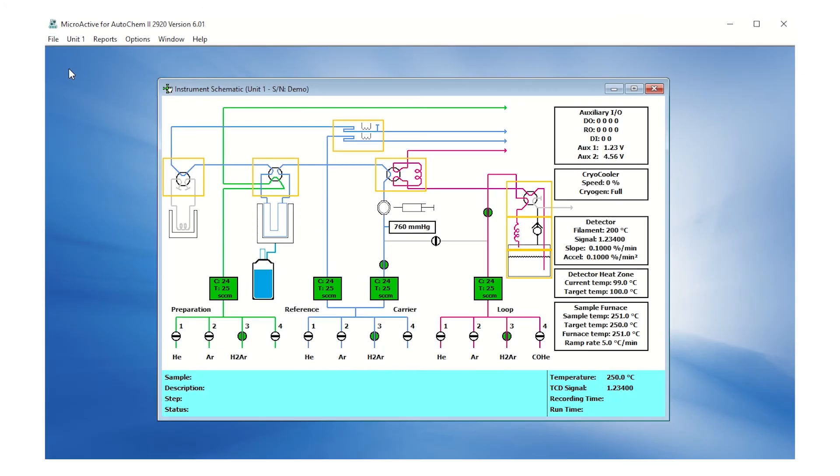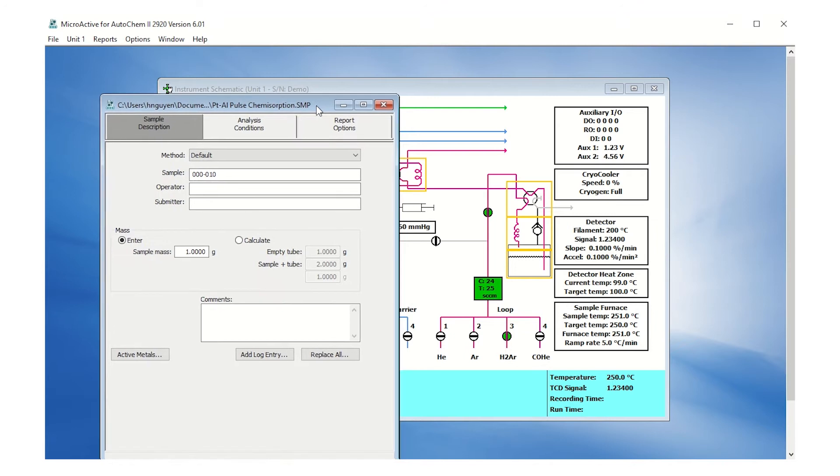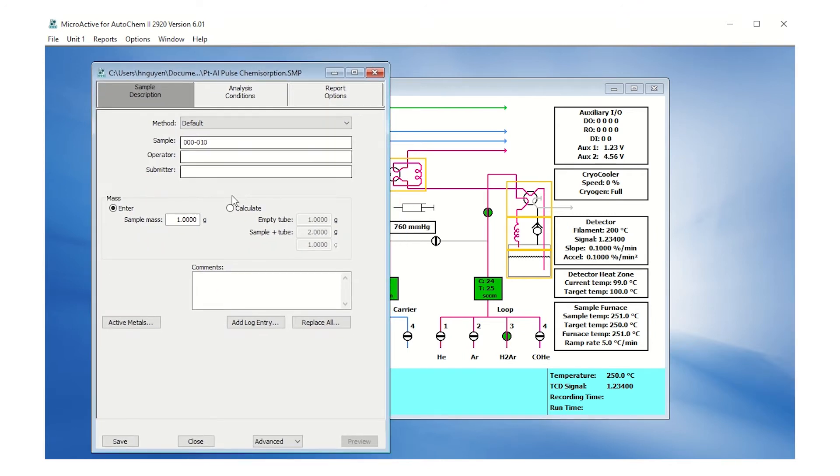Open a new sample file in the microactive software by clicking File, Open, and enter the name of your choice, and click Open. Click OK when asked if you wish to create a new sample file. Type the empty tube mass and sample plus tube mass.